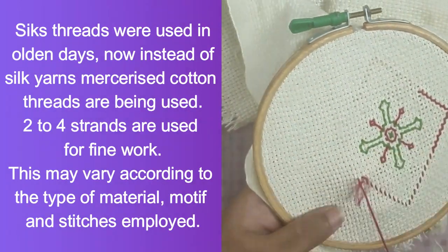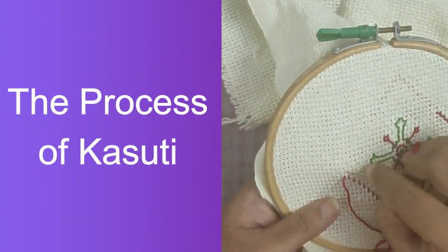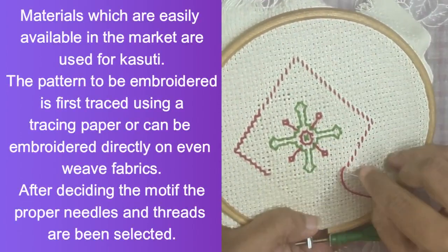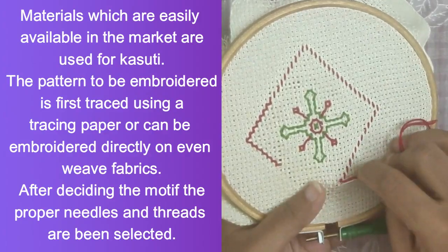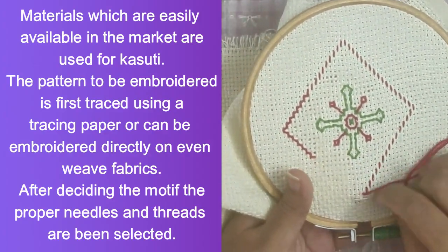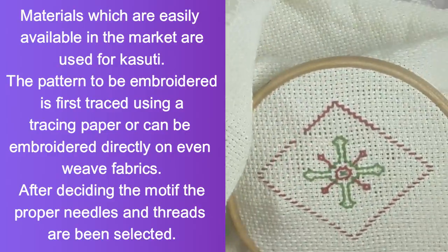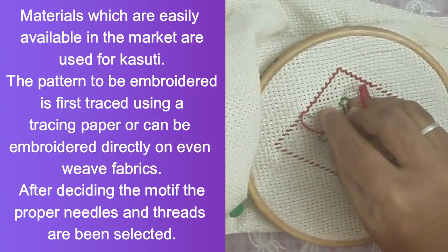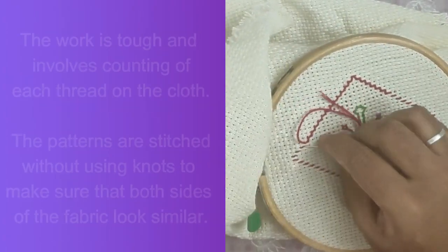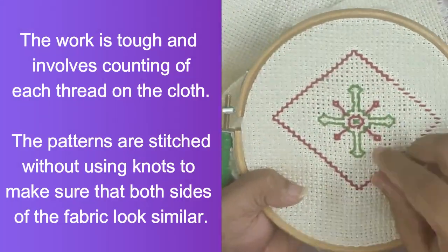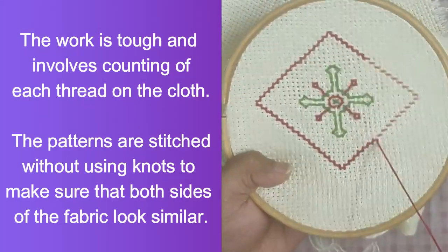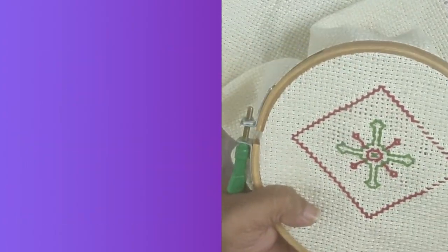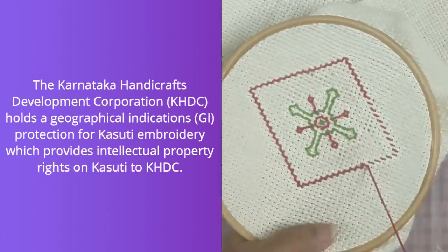Materials easily available in the market are used for Kasuti. The patterns to be embroidered are first traced using tracing paper, or can be embroidered directly on even-weave fabrics. After deciding the motif, the proper needles and threads are selected. The work is tough and involves counting of each thread on cloth. The patterns are stitched without using knots to make sure that both sides of the fabric look similar.